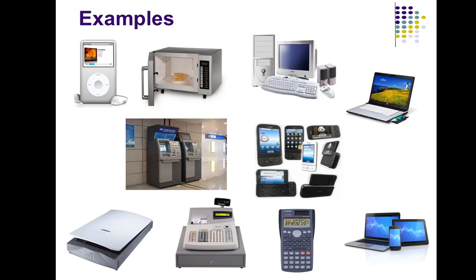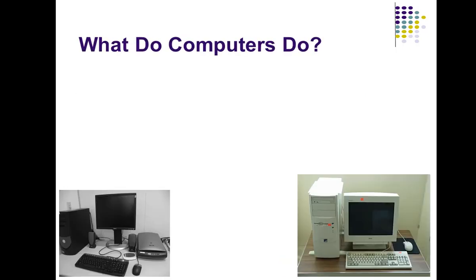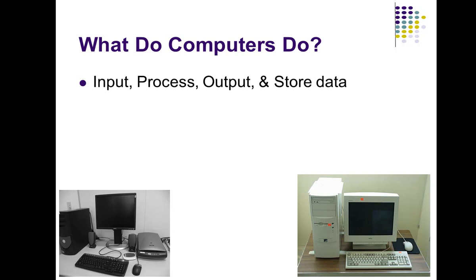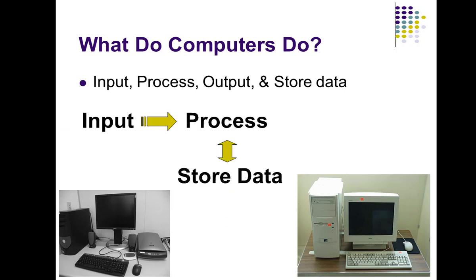We want to look at examples of computers, and all these could be examples of computers. What do computers do? They perform four basic operations: input, process, output, and storage. In other words, they accept data, they process data, they store data, and then output or retrieve data for effective human understanding. So there is an input, there is process, there is storage, and then there is output.